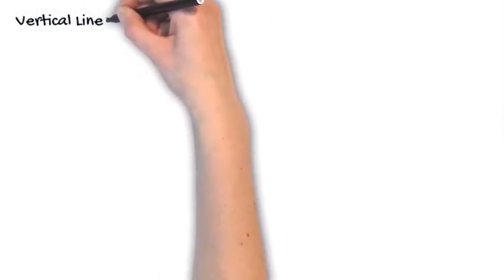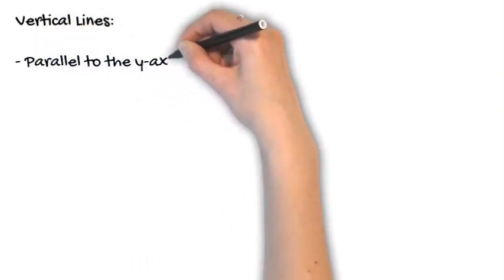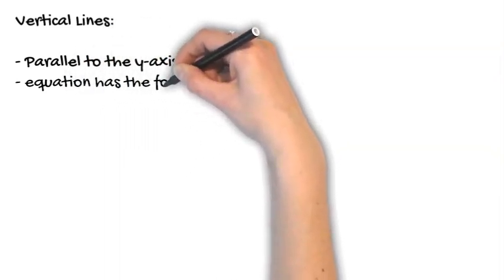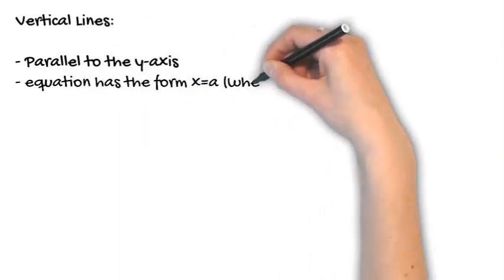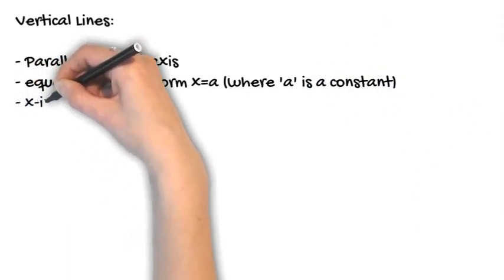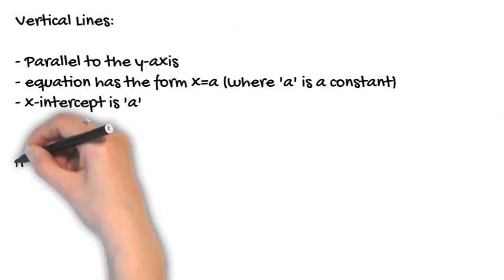For vertical lines, these lines are parallel to the y-axis. They have the equation in the form x equals a, where a is a constant value, and the x-intercept or the point where that line crosses the x-axis is the value of a.